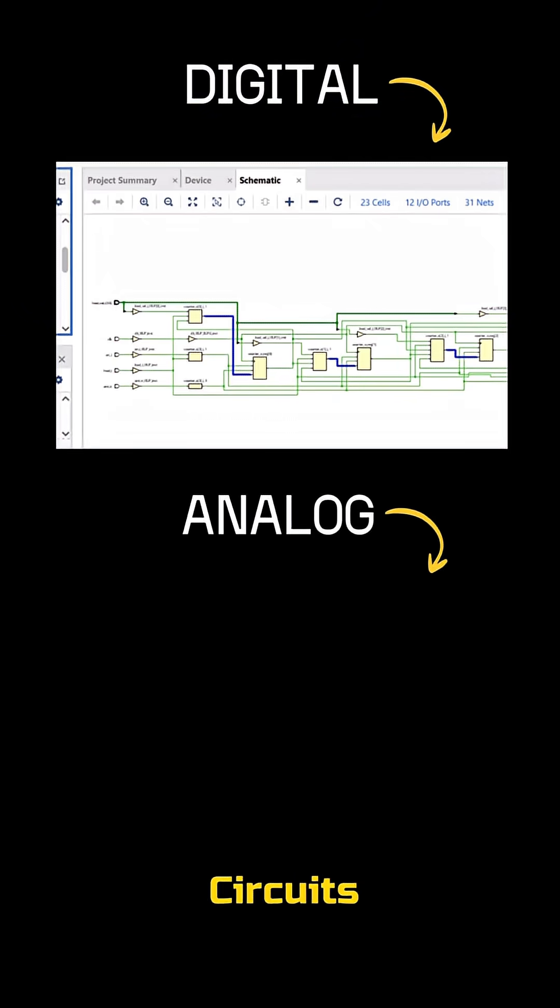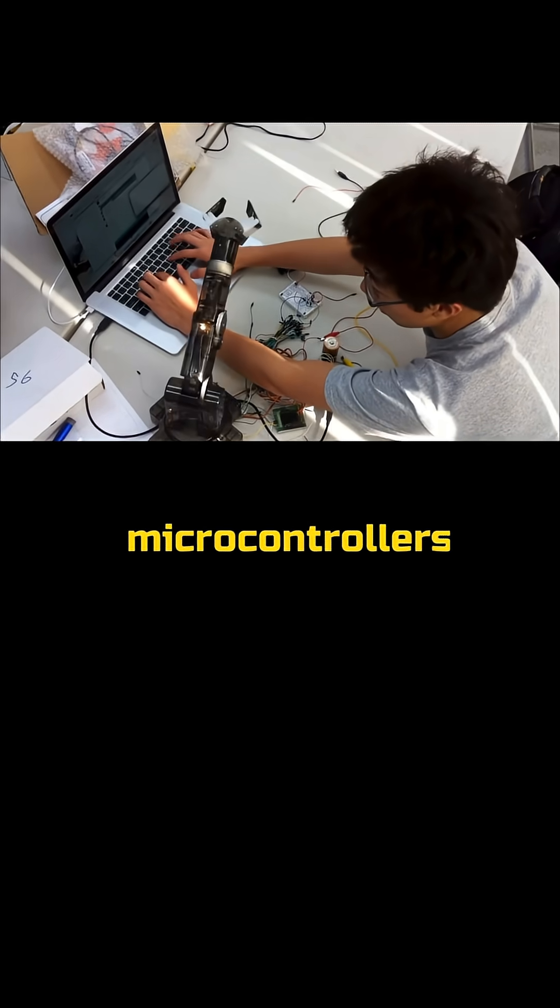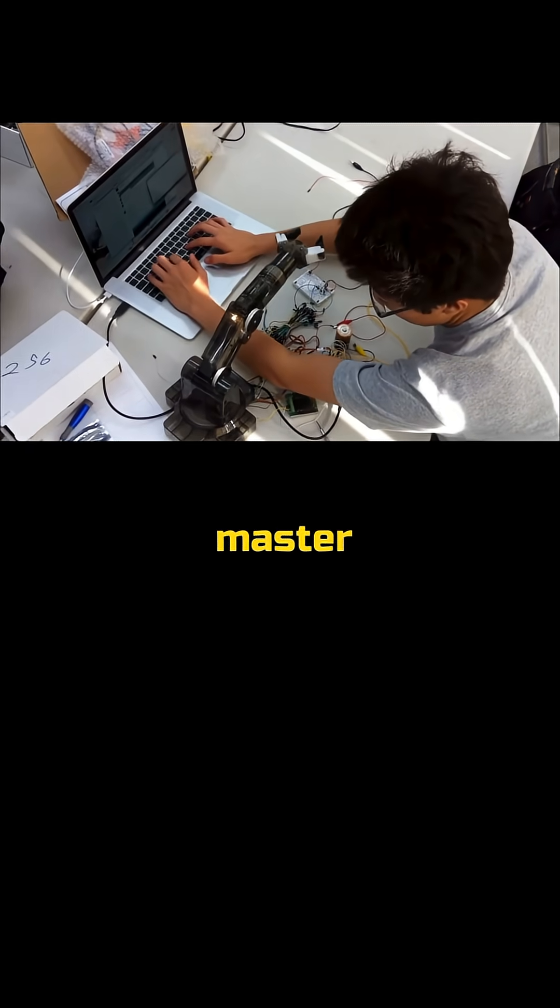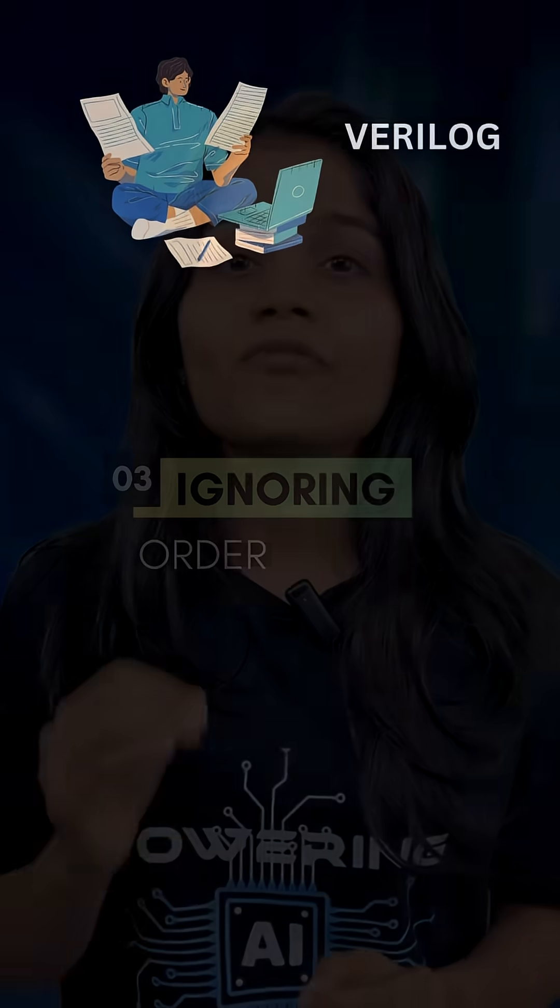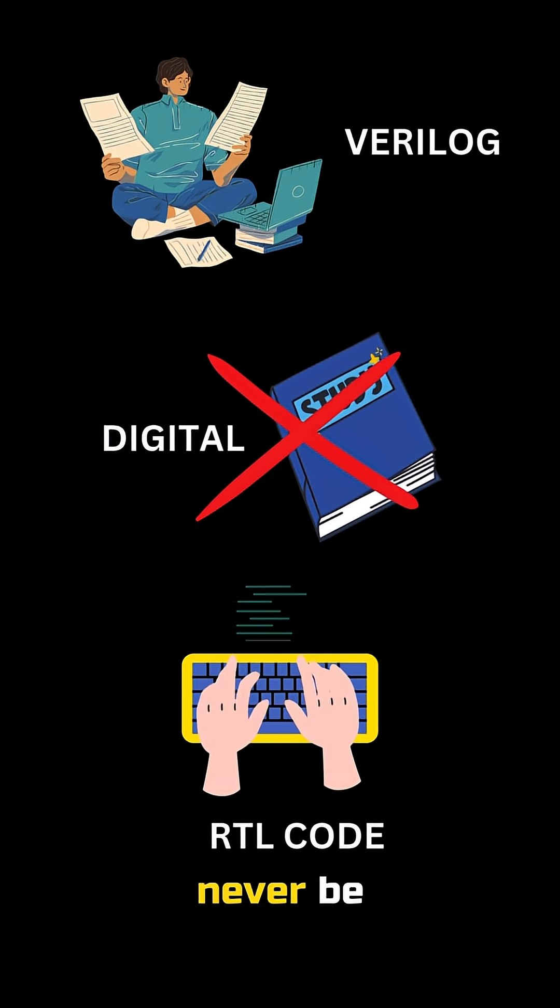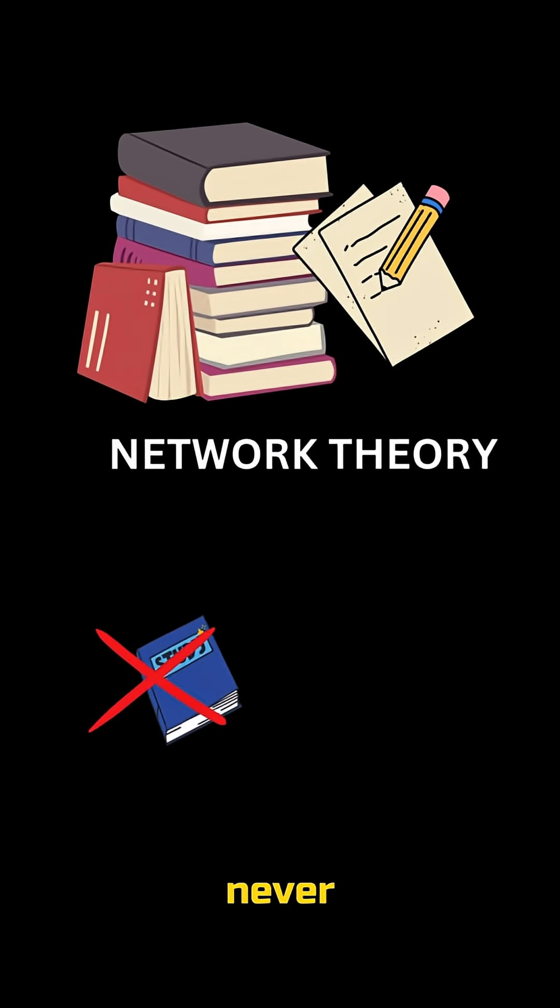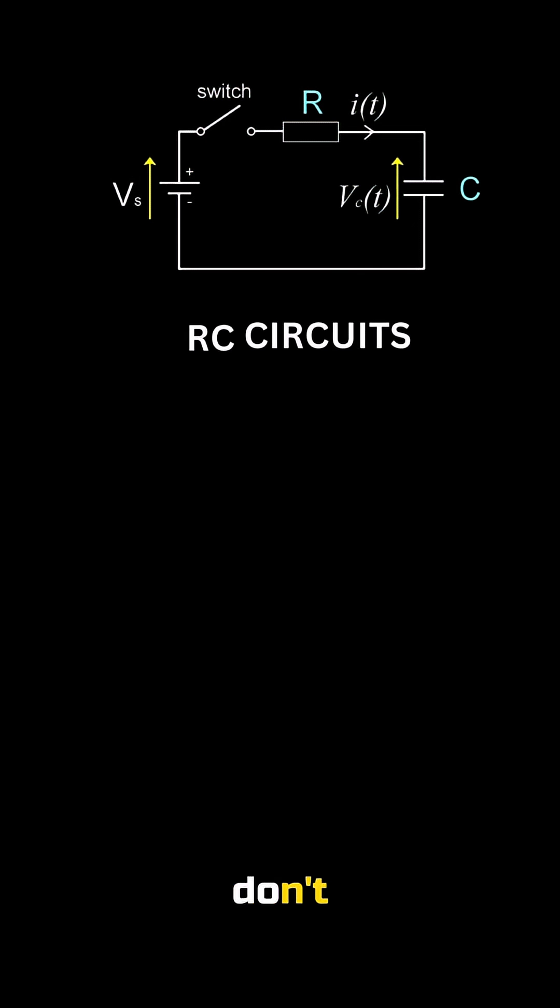And only then you'll be a master in electronics. Third, ignoring the order. If you start with Verilog without studying digital, you'll never be able to write good RTL codes. If you ignore network theory, you'll never be able to master analog. And if you don't know RC circuits, you can never master CMOS.